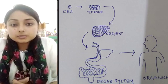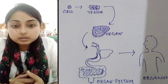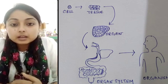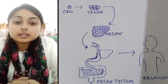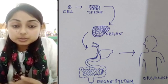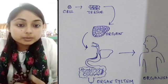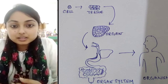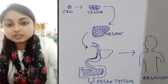Several organ systems are working together as a unit to keep our body functioning. These organ systems may be the excretory system, the tissue system, the skeletal system, the reproductive system, the nervous system. In today's class, we are going to learn about the circulatory system.